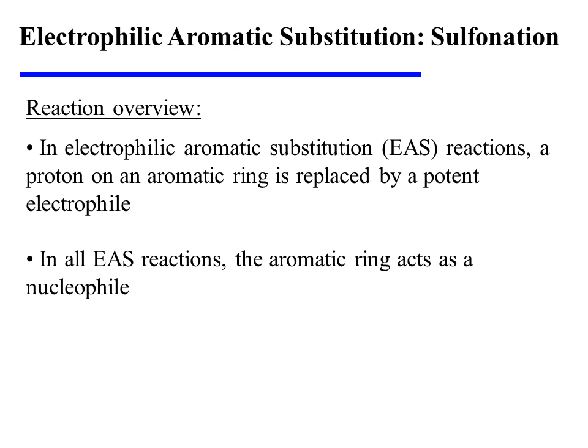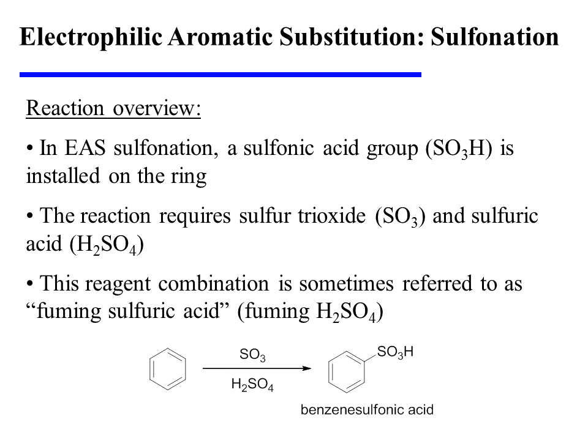In electrophilic aromatic substitution reactions, a proton on an aromatic ring is replaced by a potent electrophile. In all EAS reactions, the aromatic ring acts as a nucleophile. In EAS sulfonation, a sulfonic acid group is installed on the ring. This reaction requires sulfur trioxide and sulfuric acid, and this reagent combination is sometimes referred to as fuming sulfuric acid.